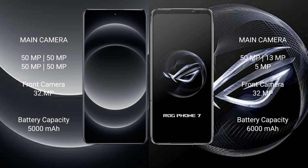The Xiaomi 14 Ultra features a quad rear camera setup: 50MP + 50MP + 50MP + 50MP, and a 32MP front camera. The ASUS ROG Phone 7 has a triple rear camera setup: 50MP + 13MP + 5MP, and a 32MP front camera.